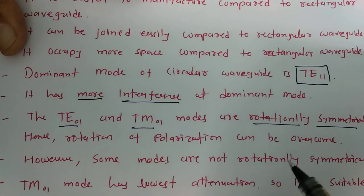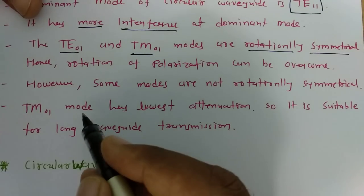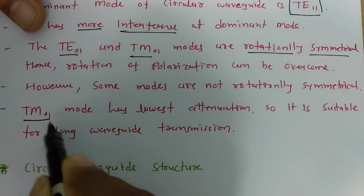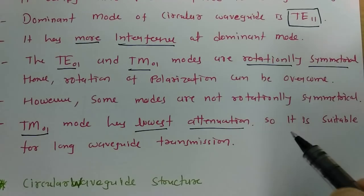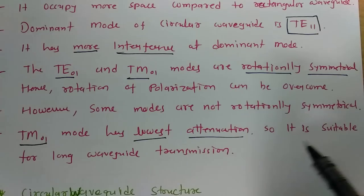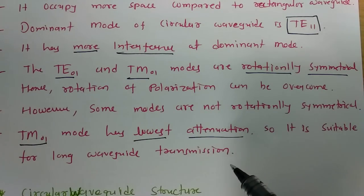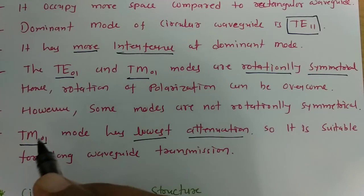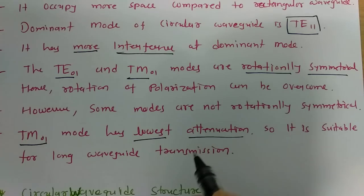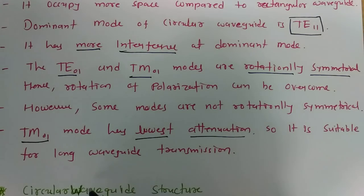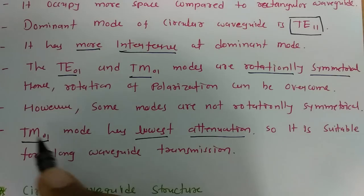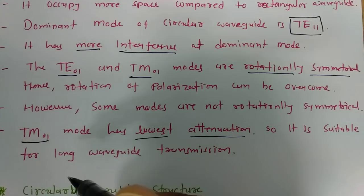However, all modes are not rotationally symmetrical, so the polarization rotation problem will exist with other modes. Circular waveguide has an advantage that TM01 mode has the lowest attenuation, making it suitable for long-distance waveguide transmission. We can achieve long-distance waveguide transmission using TM01 mode in circular waveguide.